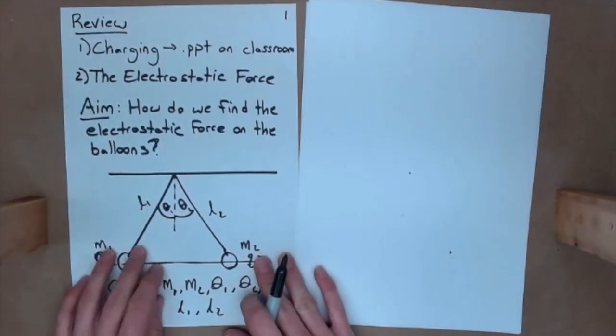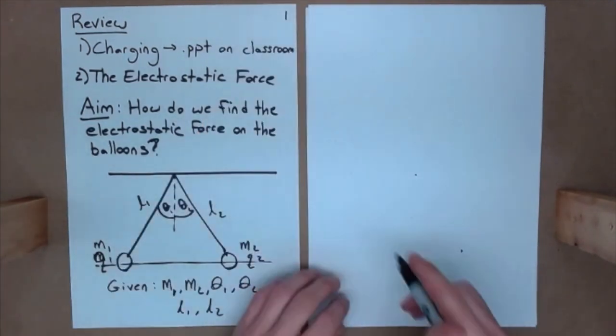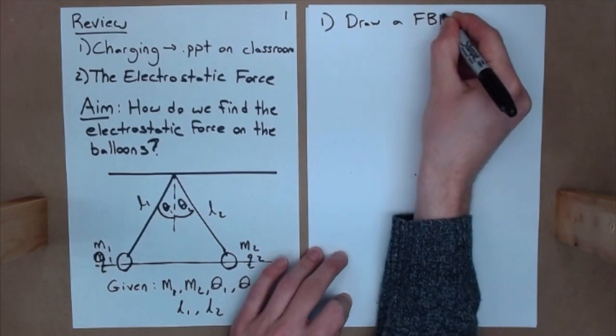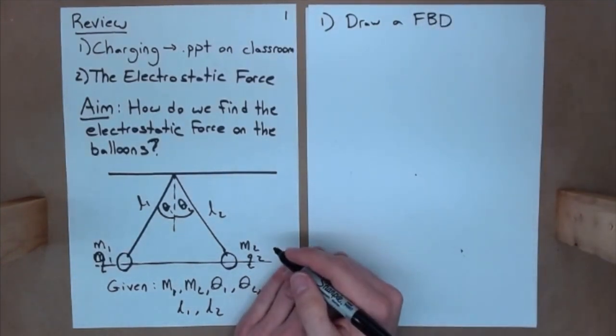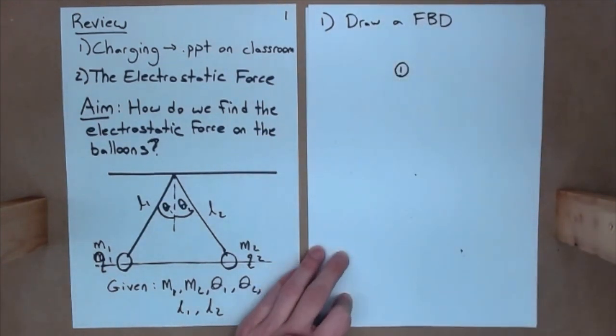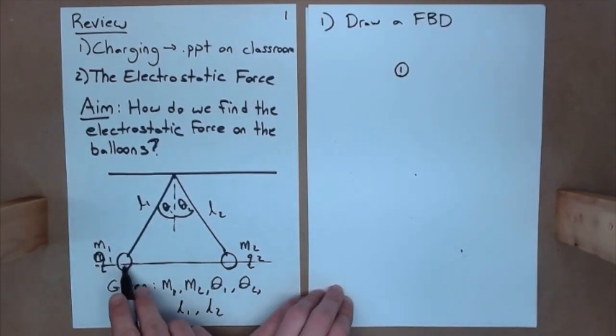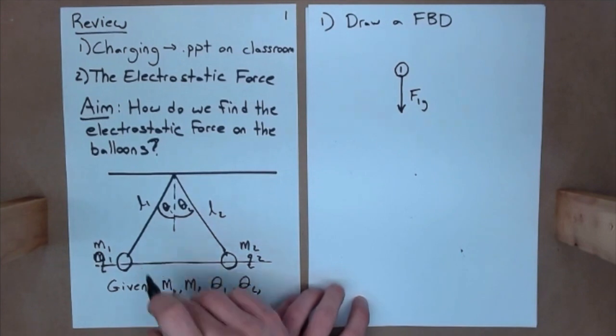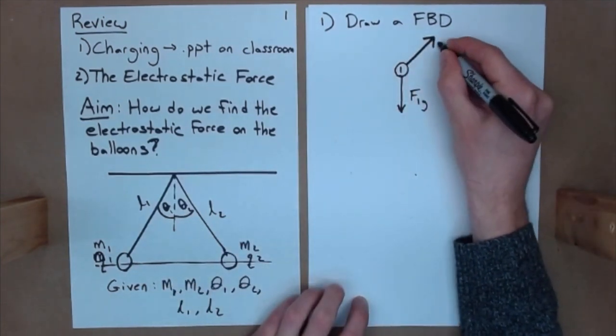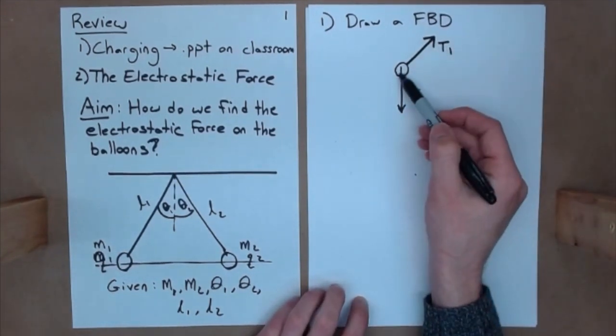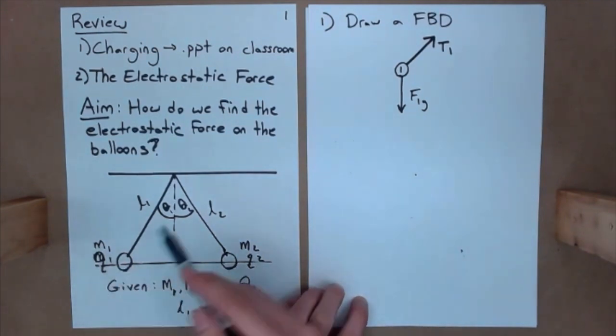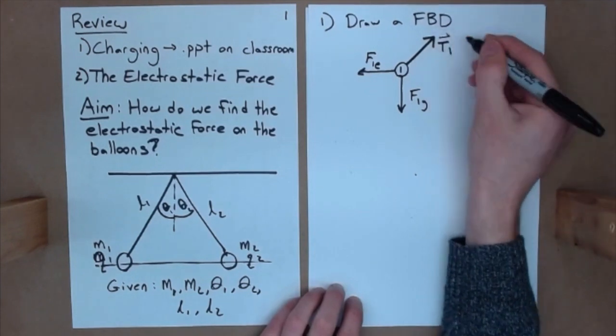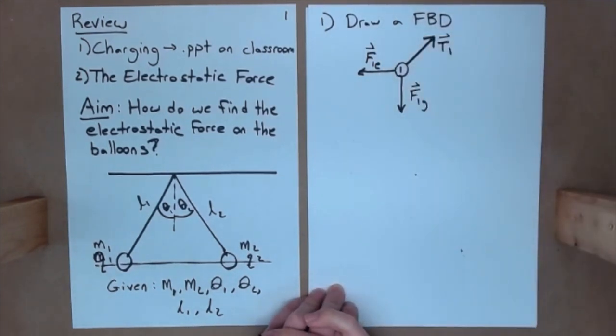So, first thing we're going to do, just like any other force problem, we're going to draw a free body diagram. Okay, I'm just going to choose a charge, and I'm going to make my choice Q1. So, let's say here is charge 1. We know that there are a couple of forces acting on Q1. The first most obvious one is going to be F1G pointing down. We also have the force of tension, because this string is pointing this way, and I'll call that T1. Now, repelling this balloon 1 away from 2 is this horizontal force that we can't see, but we know must be present, which is going to be the electrostatic force on 1. These are all vectors, so let me go ahead and add my vector notation at the top.